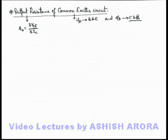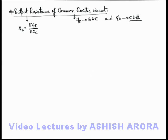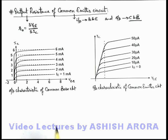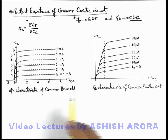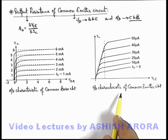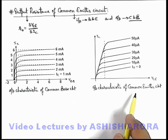And for the same, just have a look on the output characteristics of both the situations, common base as well as common emitter circuit. Here we can see the two pictures are showing us the output characteristic of common base circuit, and this is the output characteristic of common emitter circuit.